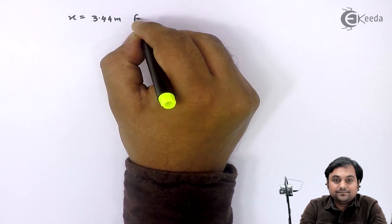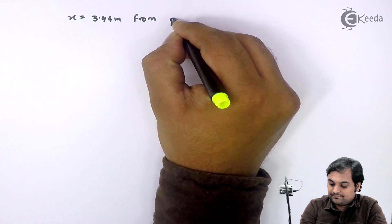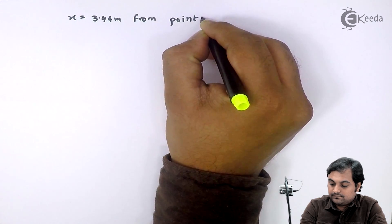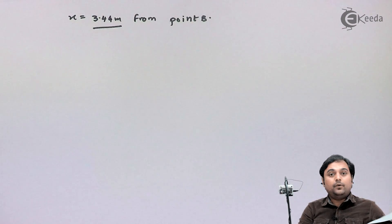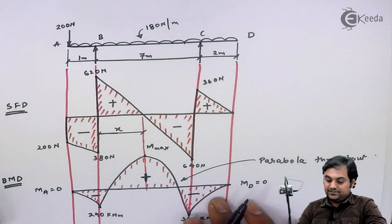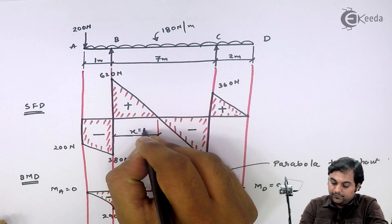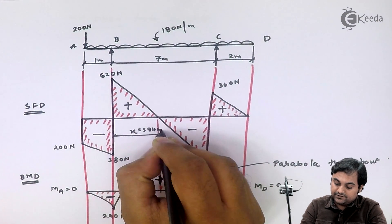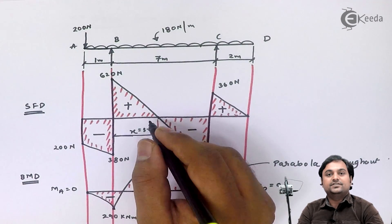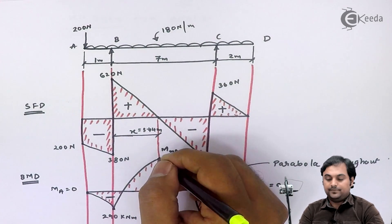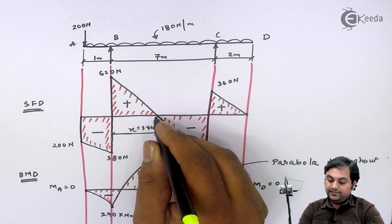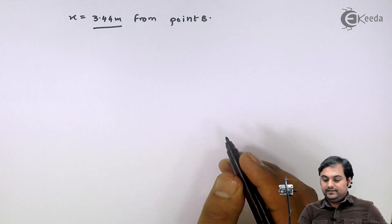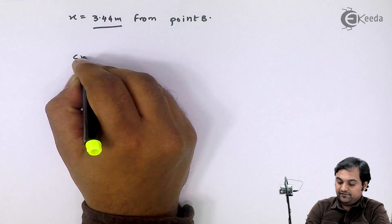From point B, so now I know that this distance is 3.44 meters where shear force is zero and bending moment is maximum. Now I will be calculating bending moment at this particular point, and I will say that it is step number 5.